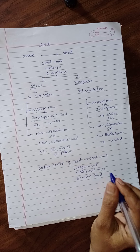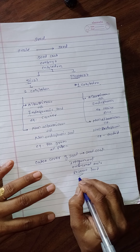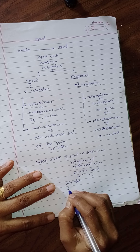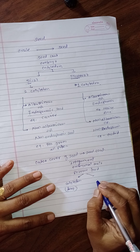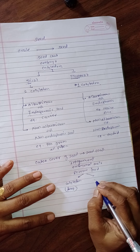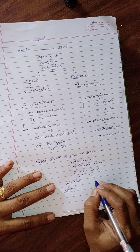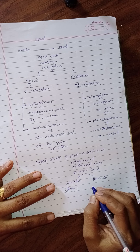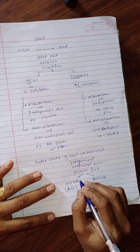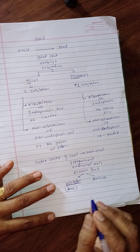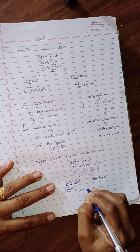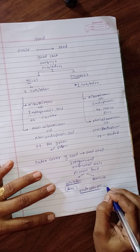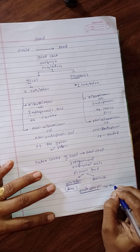Reserve food material: in dicot it is present in cotyledon. Both dicot and monocot have reserve food material in the form of cotyledon. In some seeds, endosperm also acts as reserve food material, and it is formed as a result of triple fusion.